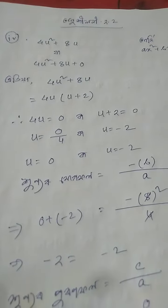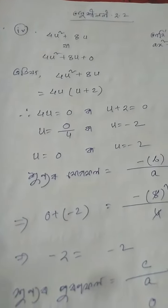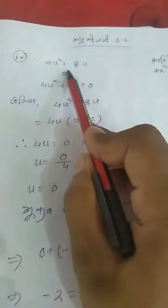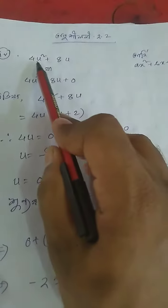Namaskar! In the 2.2, the number is 4u² plus a². This is a very important thing.